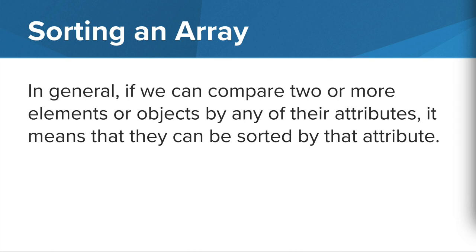For example, if two elements have a numerical attribute, we can sort them from least to greatest or from greatest to least. And if two elements have a string value, we can sort them alphabetically, or even from shortest string to longest string, or vice versa.